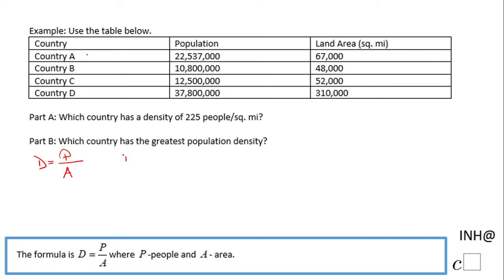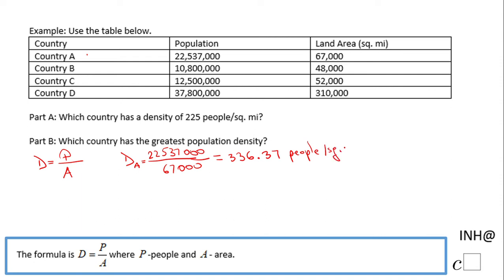The density of country A: the population is 22,537,000 and the land area is 67,000 square miles. We divide 22,537,000 by 67,000 and get 336.37. Rounding to the nearest hundred, the population density of country A is 336 people per square mile.